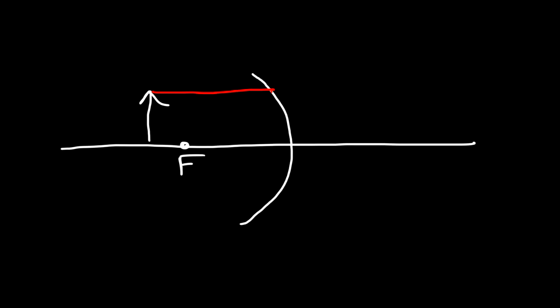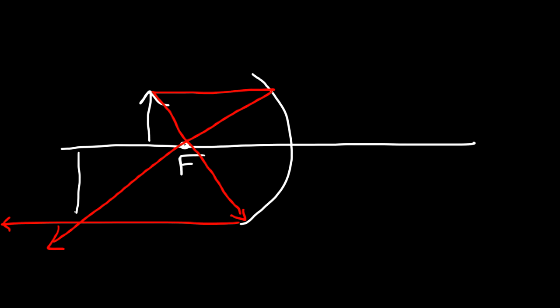From the mirror, let's draw a line to the focal point. Now let's draw another ray from the object through the focal point to the mirror, and then it's going to bounce back and go in this direction. Where the rays intersect, that is the location of the image.